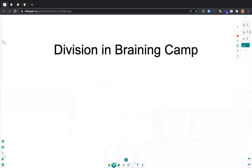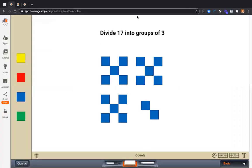And I want to show you a few of these meanings in Braining Camp. So what I have right here is 17 divided by 3. I'm going to start with the first meaning of division. I'm going to take 17 and I'm going to divide 17 into groups of 3.